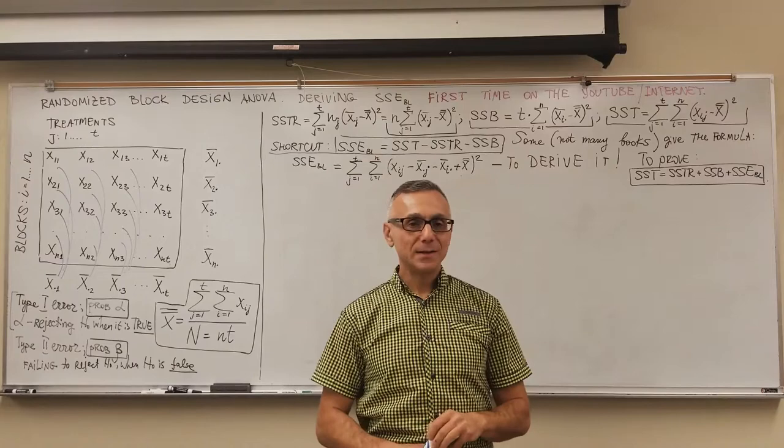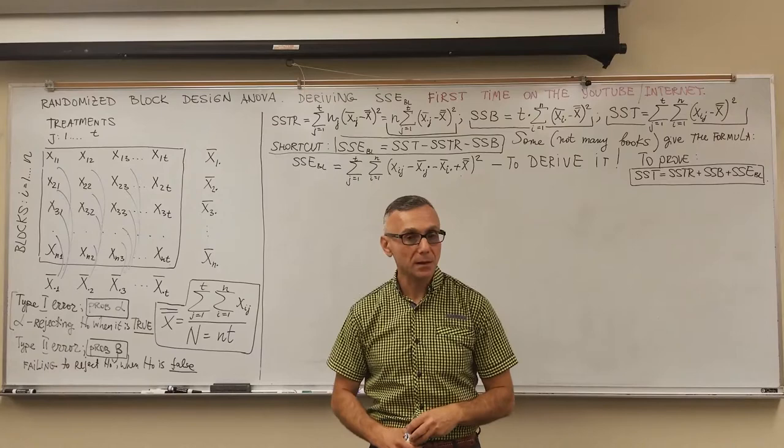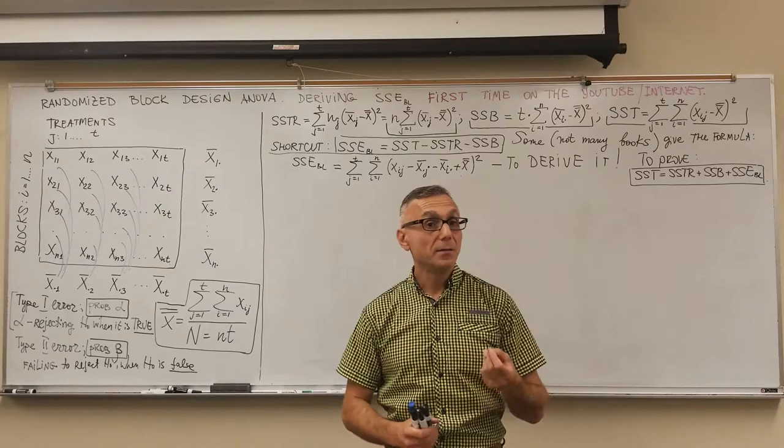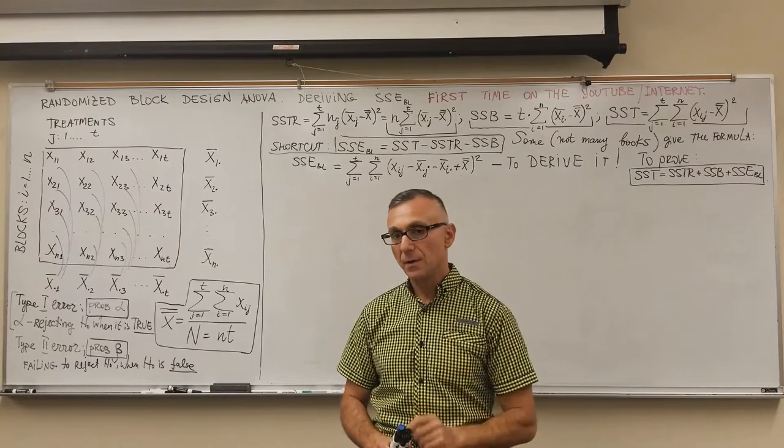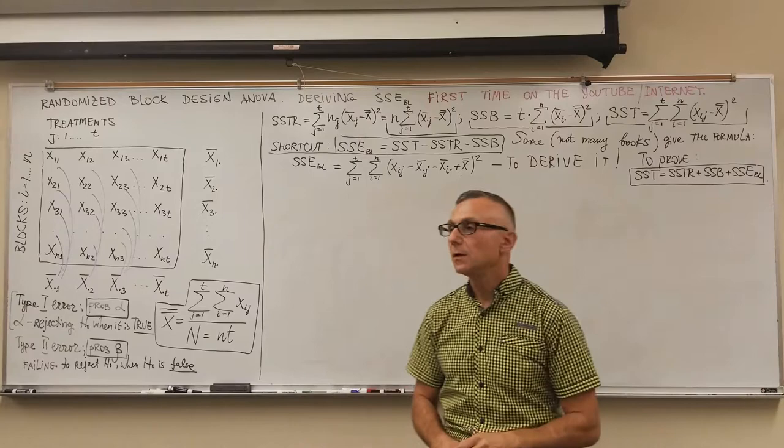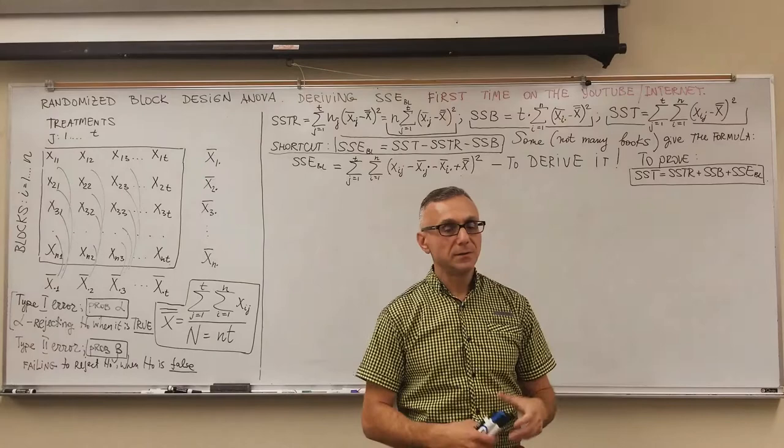Welcome to the statistics class. The randomized block design represents an enhancement of one-way simple analysis of variance. Today I would like to exactly derive a formula for one of the error components. I haven't seen any postings on YouTube or the internet where they exactly derive logically the formula for the SSE for the blocks.